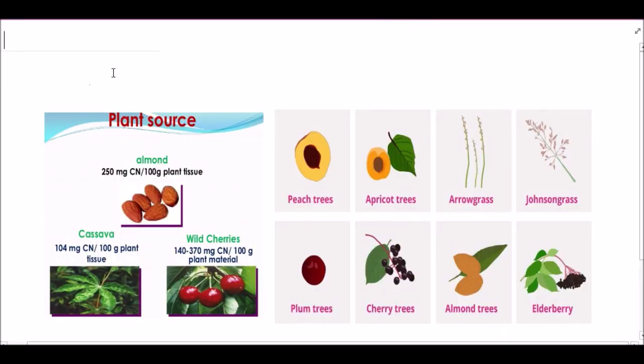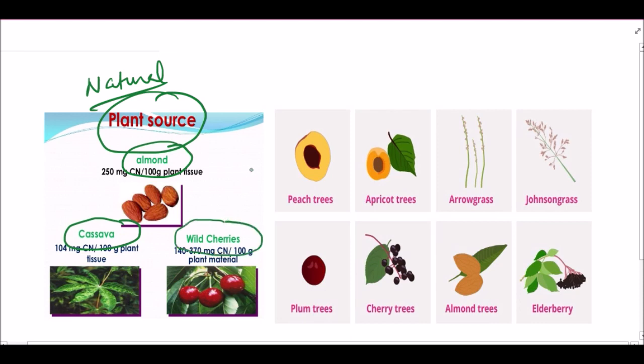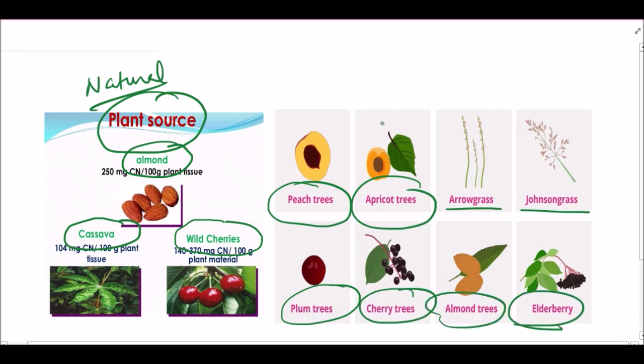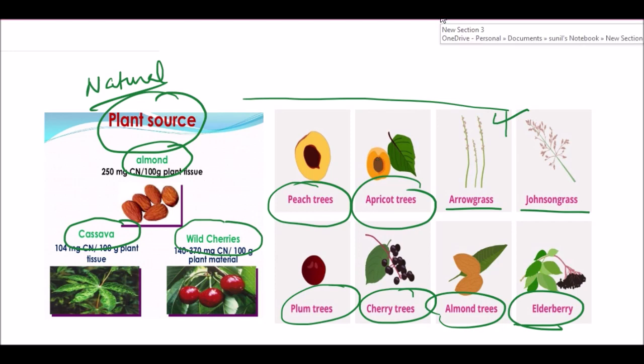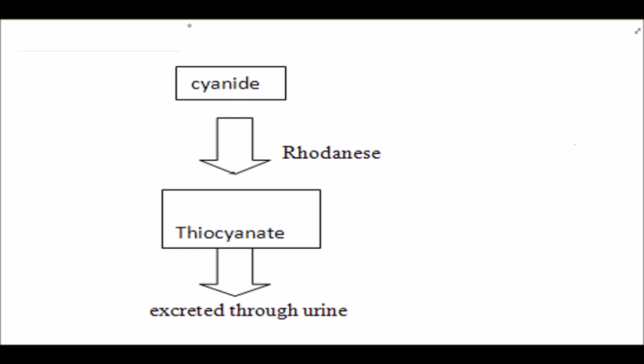Cyanide is naturally available in various sources like plant sources. It's present in almonds, in the various fruits of cassava family, cherry laurel, peach tree, apricot tree. It is also present in arrow grass, Johnson grass, plums, cherry, almonds, and elderberries. These are the plants and fruits which carry cyanide in very small quantity.